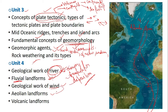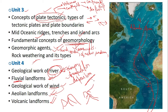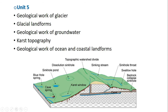We also have volcanic landforms — when a volcano is active, you get mountains and ridges which are actually volcanic landforms.